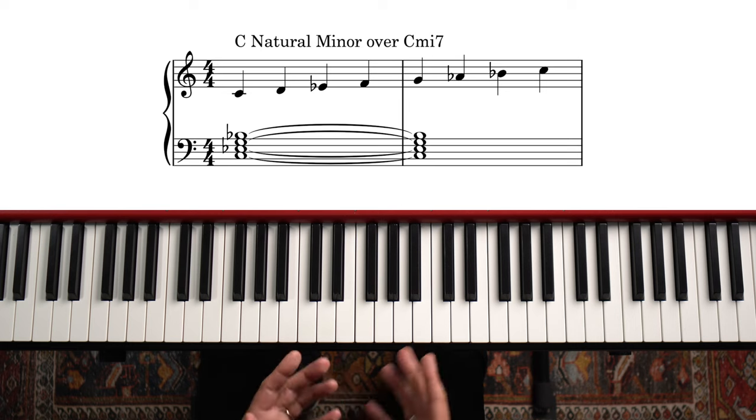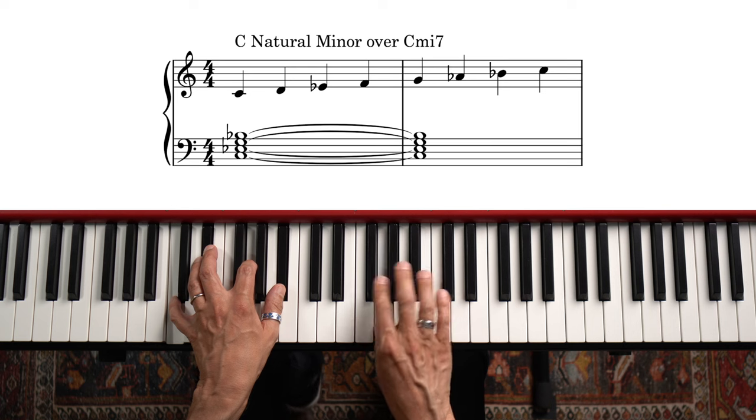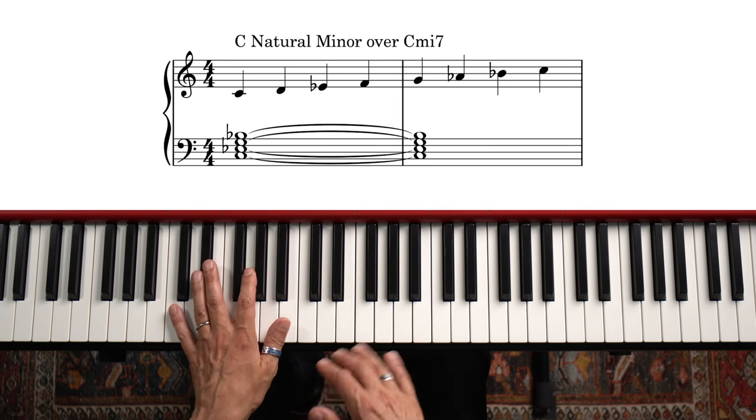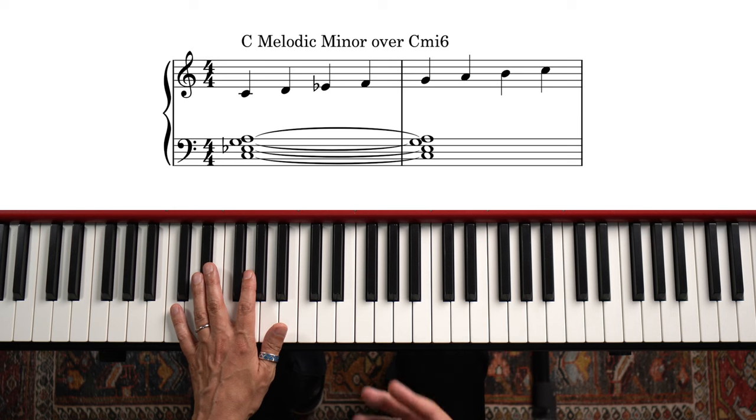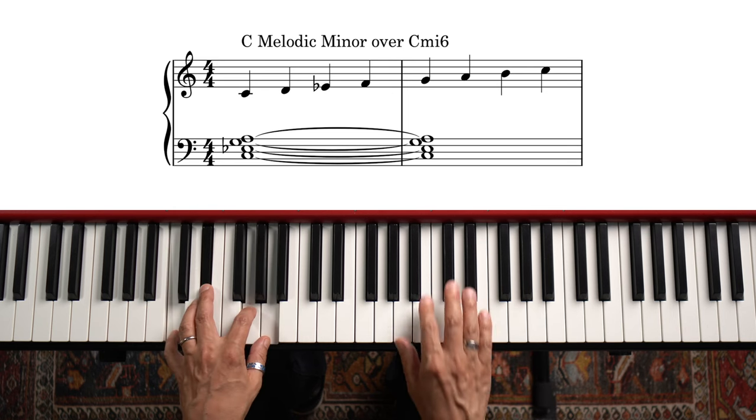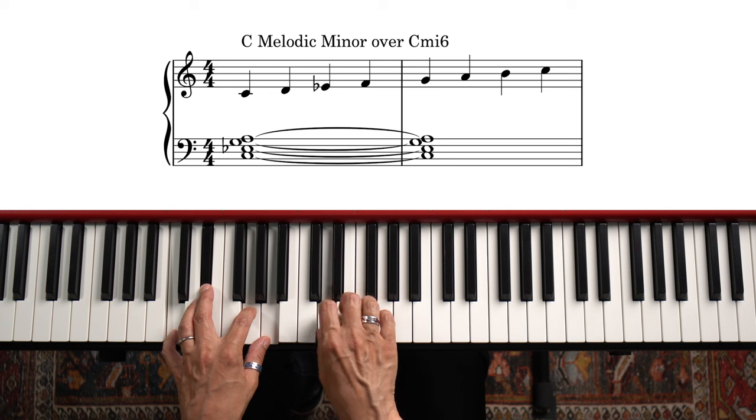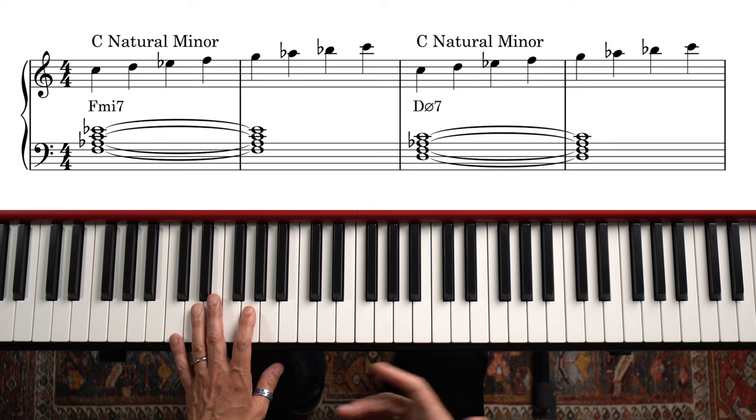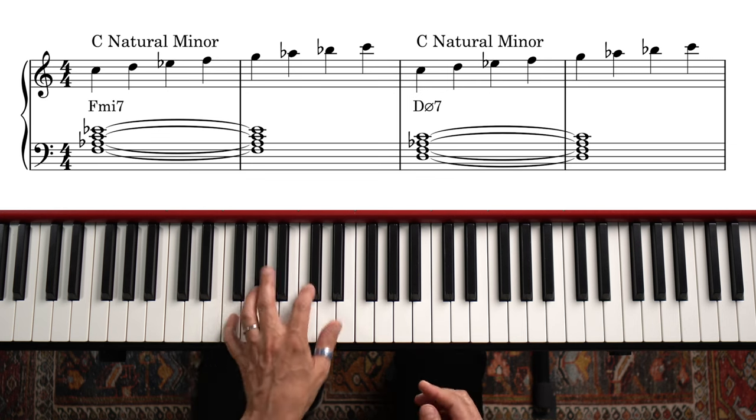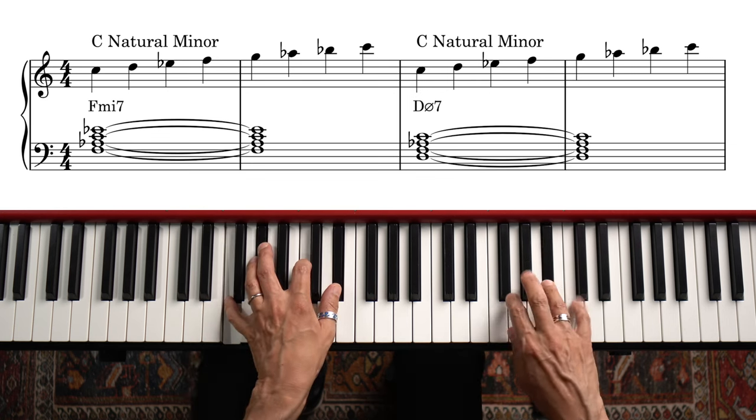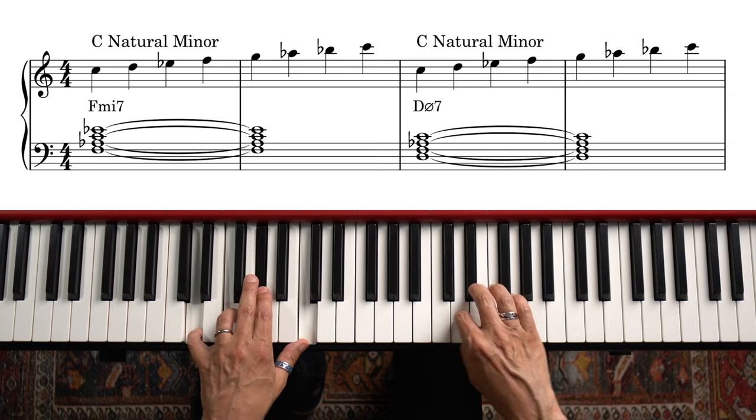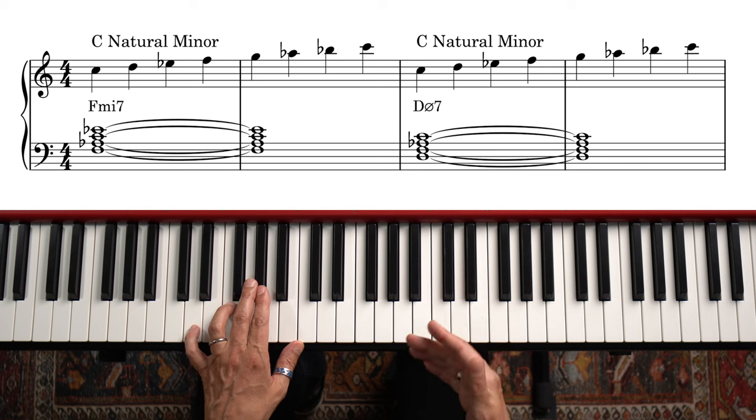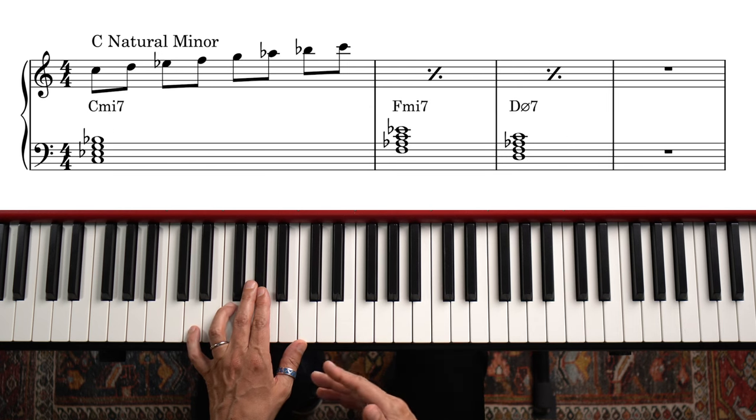Here's an example of playing the tonic chord as a C minor seven and using the natural minor scale over it. Here's an example of playing the chord as a C minor six and using the melodic minor scale over it. Now for the F minor seven and the D minor seven flat five chords, pretty much our only key center option is C natural minor. So to keep things simple we could play the tonic chord as a C minor seven and then just play C natural minor over all three chords.